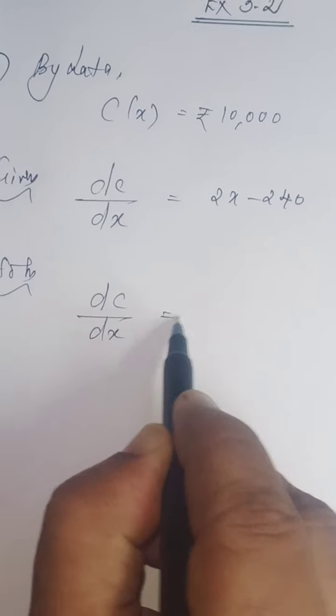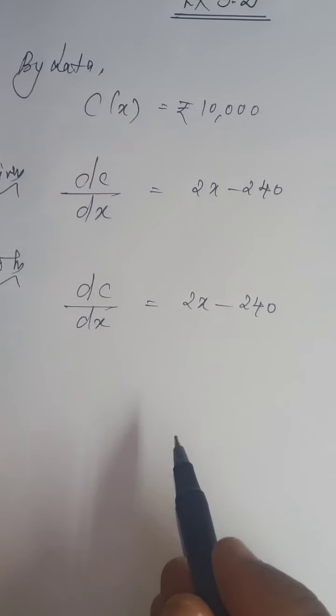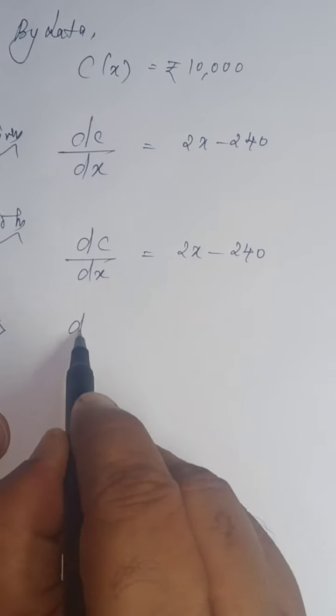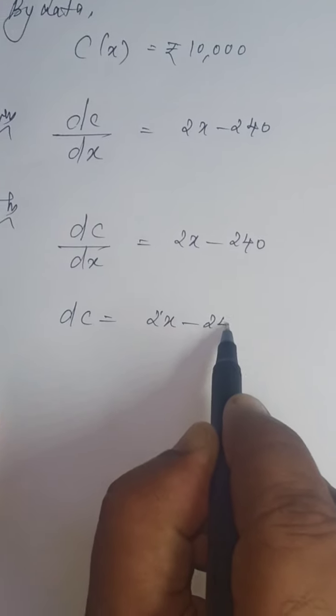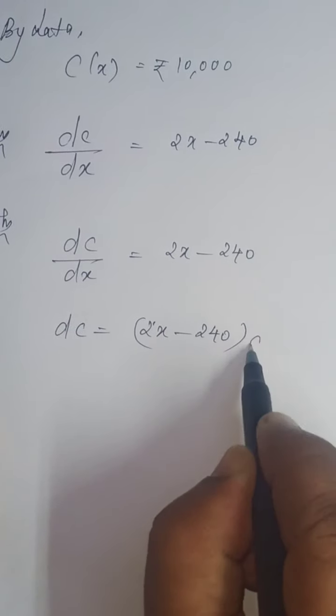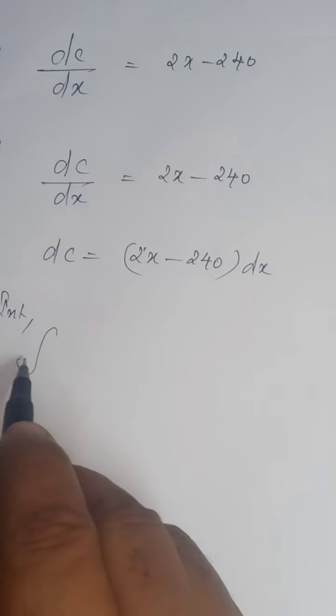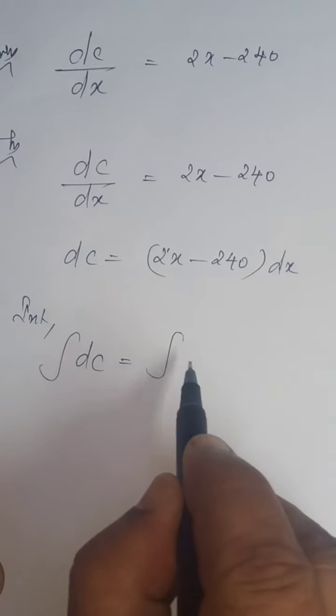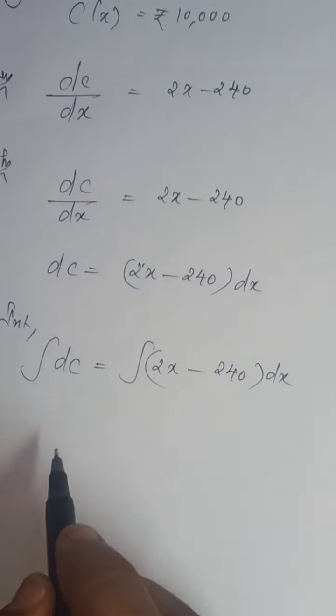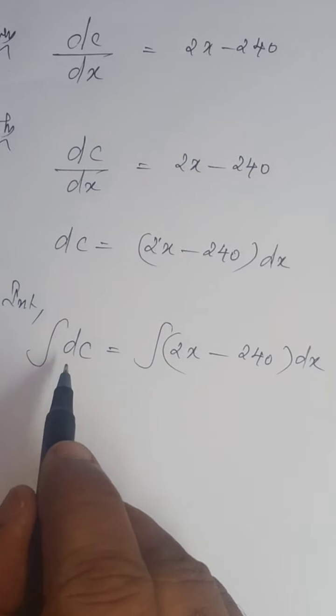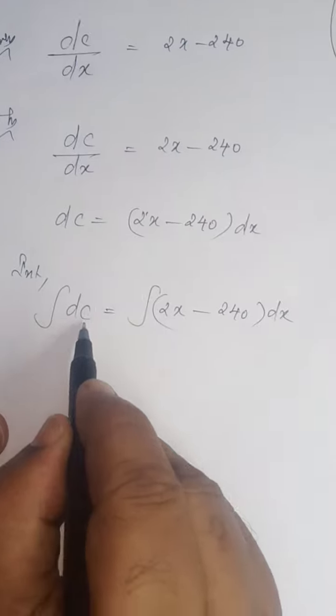So, rate of change of C of X. Cross multiply. I am retaining dC in the left hand side. 2X minus 240 into dX. Integrating on both sides. Integral dC equals integral (2X minus 240) dX. You know the integration of dX. Integration of dC is C.